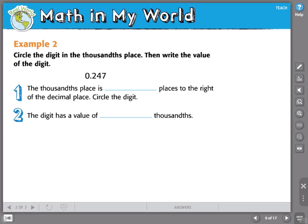Here's another example. It asks us to circle the digit in the thousandths place. Then write the value of the digit. If you are still struggling to remember the places of our decimal place value, go ahead and just write yourself a little place value chart.